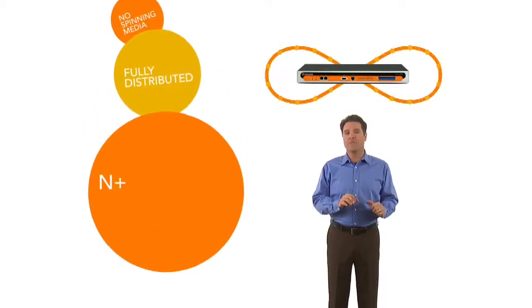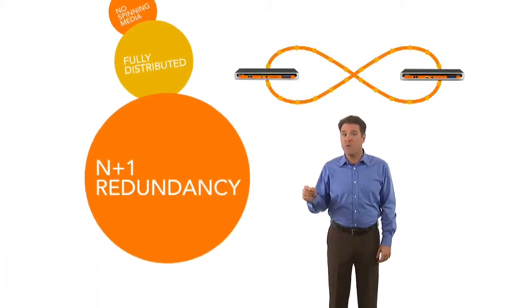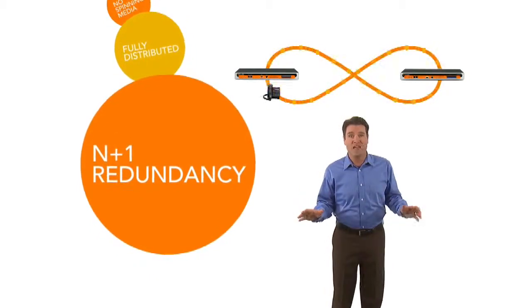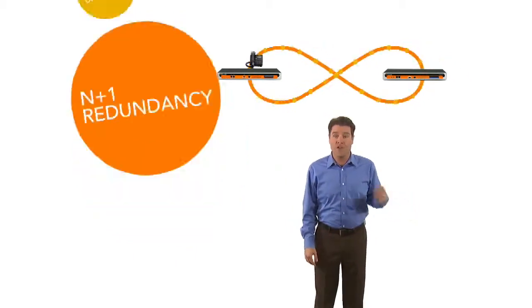Also built into your system is N plus one redundancy. Plus one means that just one additional voice switch on your network ensures redundancy for everyone. If one of your phones can't reach the switch it's associated with, it automatically goes and finds another one.